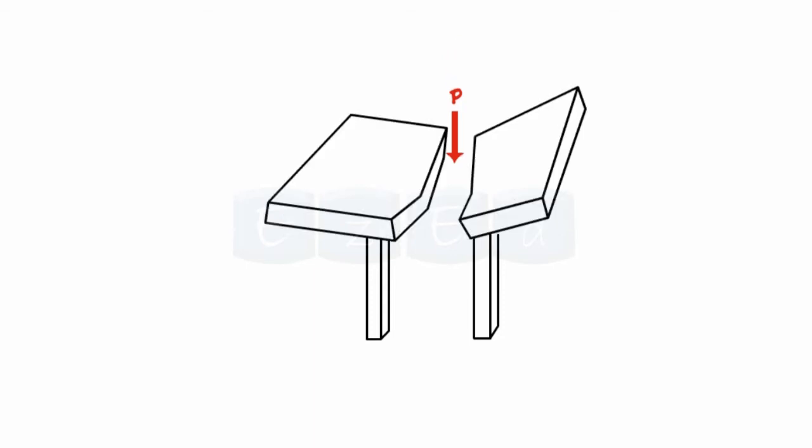Consider the following example. A thin, flat plank of wood is being supported by two supports as shown. The load P is acting at the center of the plank. In this case, the plank may bend or break depending upon the magnitude of the load.